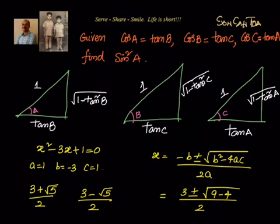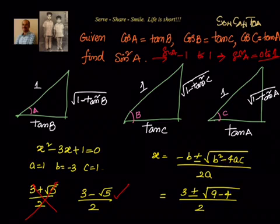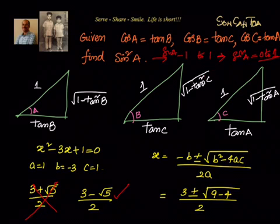Out of these two values, only one is correct. Since sin A is between minus 1 and 1, sin²A must be between 0 and 1. The value (3 + √5) / 2 is approximately 2.6, which exceeds 1 and is therefore invalid. The value (3 minus √5) / 2 is approximately 0.38, which is a valid value between 0 and 1. So the answer for sin²A is (3 minus √5) / 2.